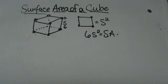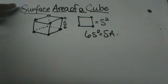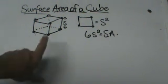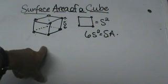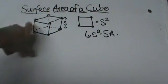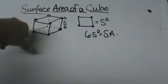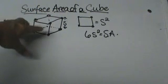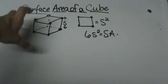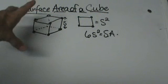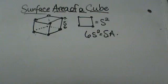Hi, welcome to Moo Moo Math. Today we are going to look at how to find the surface area of a cube. A cube is a prism where all three sides — length, width, and height — are all the same. All three measurements are the same.